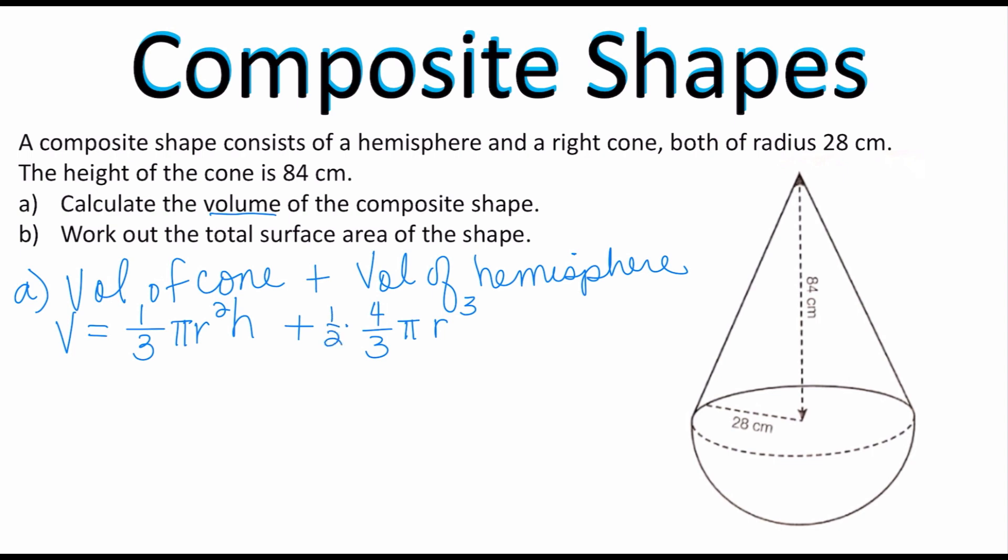So now I've set up my formula so I'm going to substitute. It's going to equal (1/3)π times the radius which is 28 squared times the height of the cone. Remember that here in the diagram 84 centimeters is the height of the cone because that is perpendicular to the center.